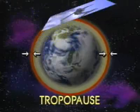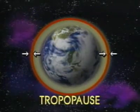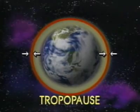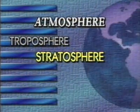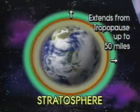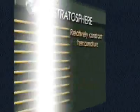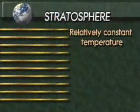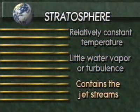The tropopause is a small region of temperature stability that forms the boundary between the troposphere and the stratosphere, and is not considered a major division. The next division is the stratosphere. It extends from the tropopause up to 50 miles and has a relatively constant temperature, little water vapor or turbulence, and contains the jet streams.